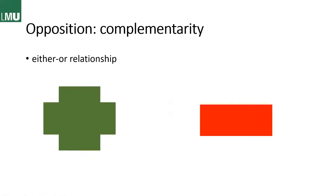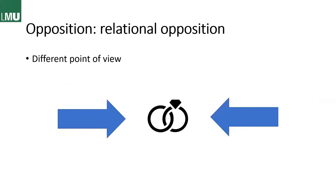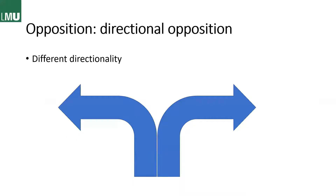We also have complementarity as another type of opposition — here we have absolutes. This is an either-or relationship. My example is 'pass' or 'fail': when you fail a test you didn't pass it, and when you pass it you didn't fail — there is no way to gradually pass or fail. Then there is relational opposition, where one thing is looked at from a different point of view — for example, husband and wife in a marriage. And directional opposition is simply a change in direction, such as left and right.